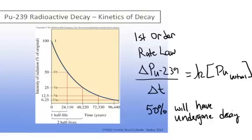And at that point, when half of the original sample is gone, if this is the initial time, and this is on the graph, you can see you're down to 50% and you go over and go down, you can see in this particular case it's 24,100 years.